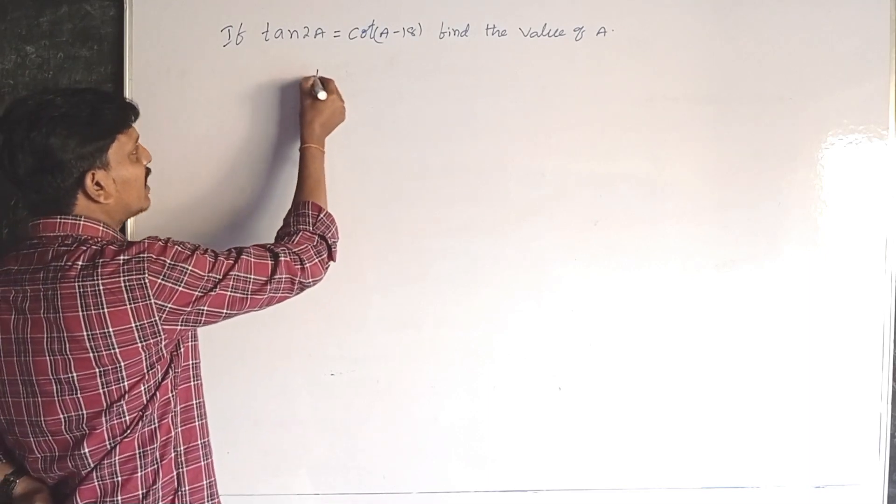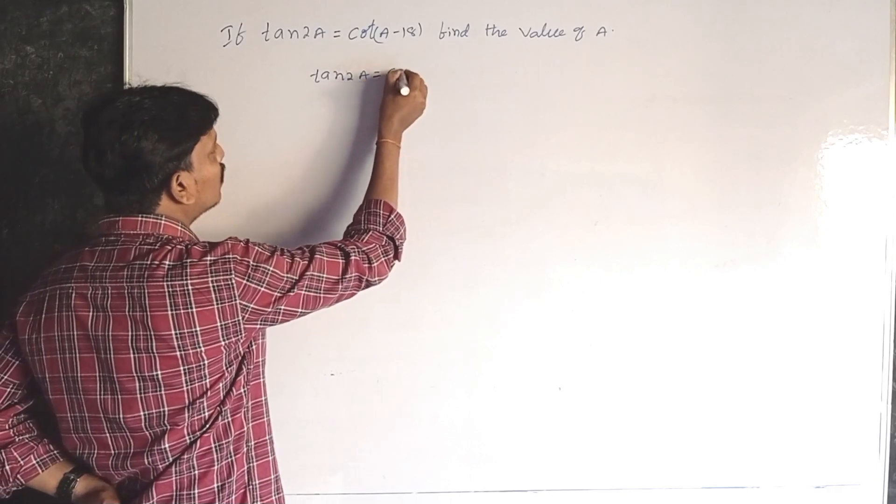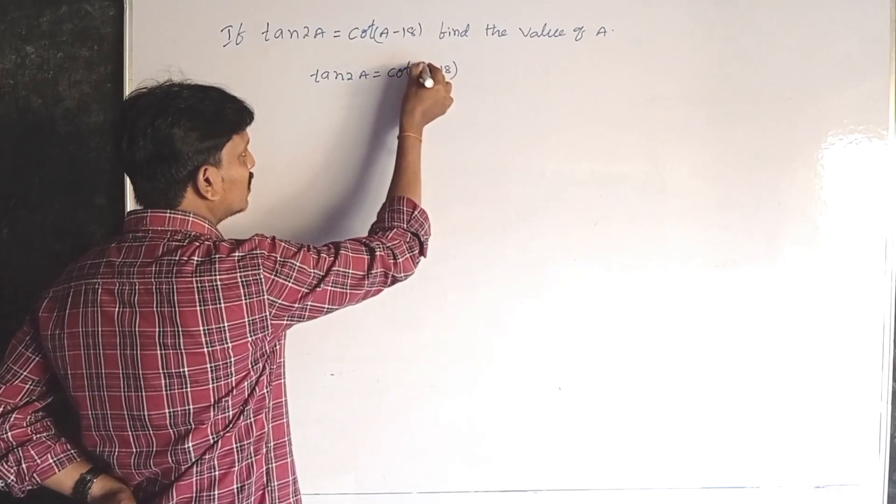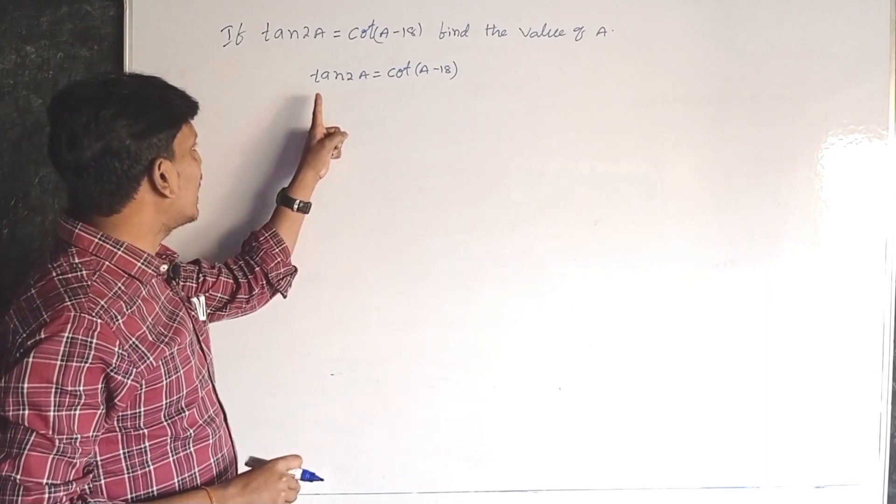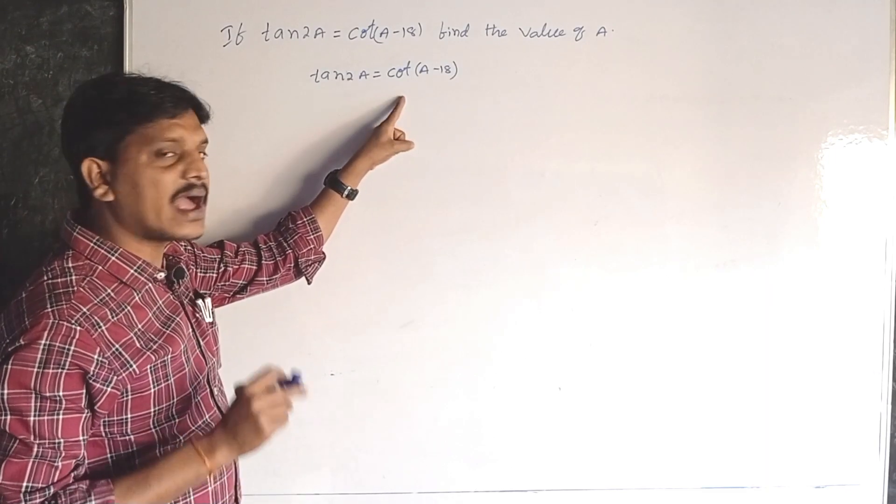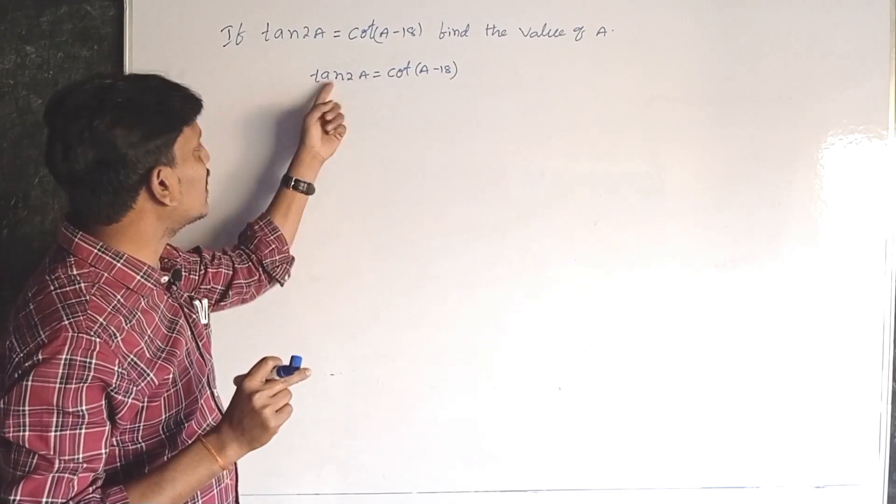What is given? Tan 2a is equal to cot(a minus 18). To solve this problem, both LHS and RHS should have the same ratios. That means either tan or cot.